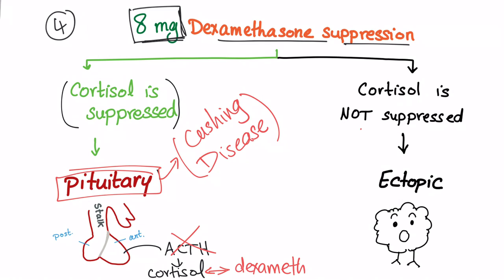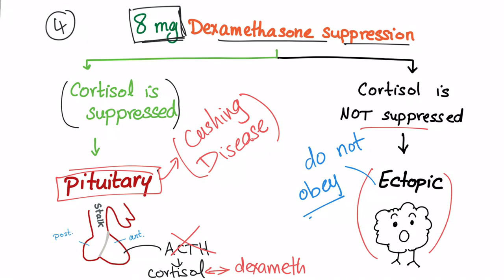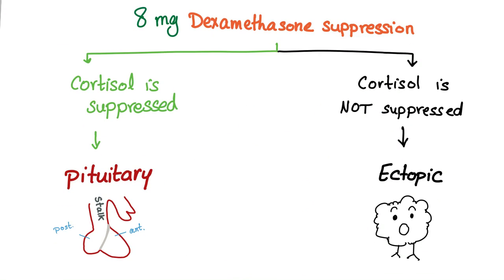If cortisol is not suppressed, the cause is ectopic. Ectopic tumors do not obey — they are not normal body organs and do not respond to the feedback signal. A normal organ would suppress, but ectopic tumors do not obey, so cortisol will not be suppressed.